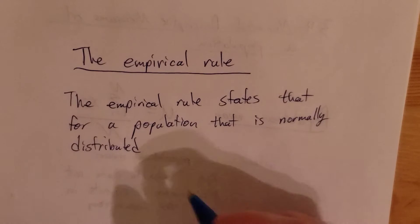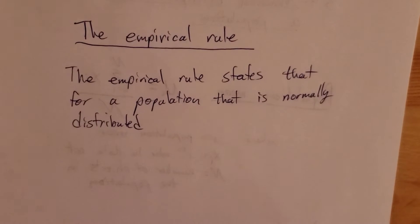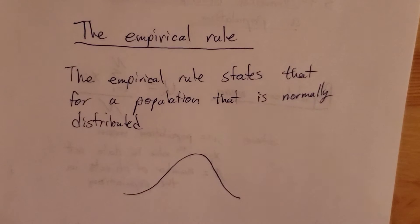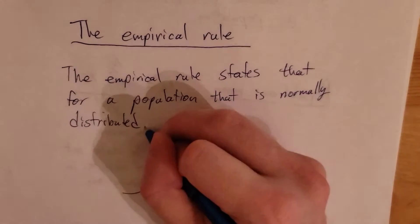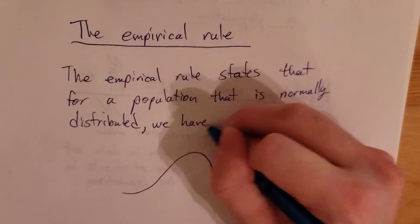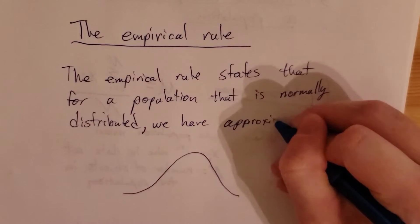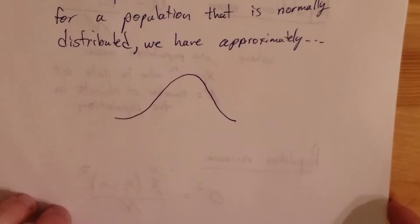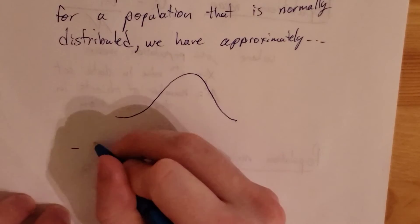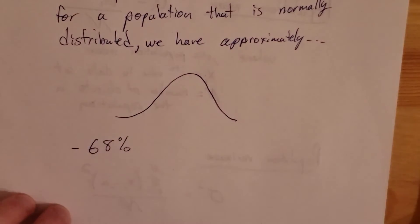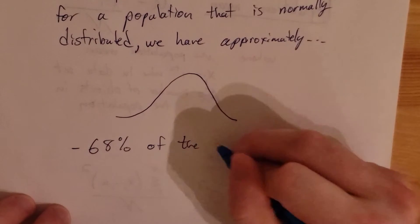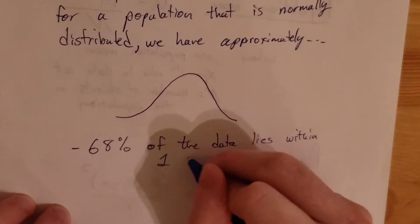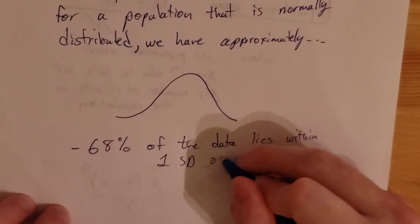So we get something that looks like a bell curve — we see data like that — and then we have approximately 68 percent of the data lies within one standard deviation of the mean.